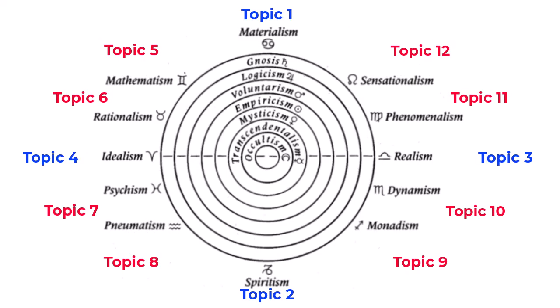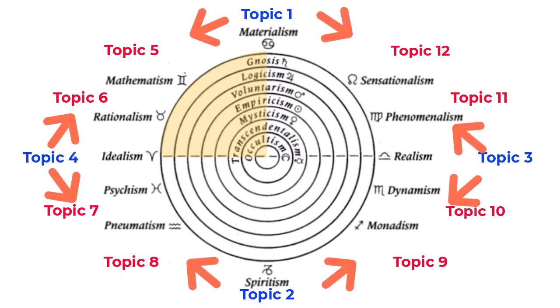If we place twelve topics on the World Outlook Diagram, it looks like this. We have four main topics — Topics 1 through 4 — at the corners. Then Topic 5 and Topic 6 are transitions between Main Topic 1 and Main Topic 4. In the same way, the other topics are transitions between two different main topics.